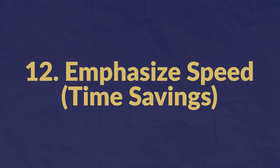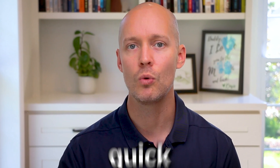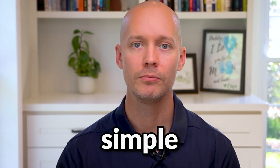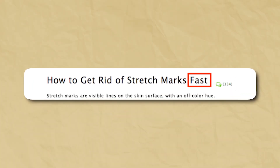Number twelve: emphasize speed or time savings. One of the most powerful benefits to emphasize is saving time. Although this usually applies to products, it can be emphasized in title tags as well. Use words like "fast," "quick," or "simple." Here's an example: "How to get rid of stretch marks fast."